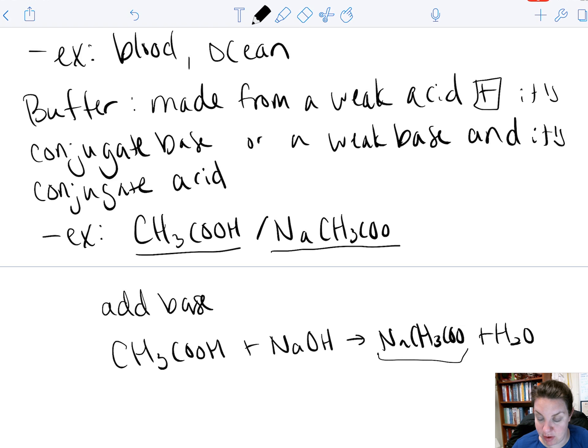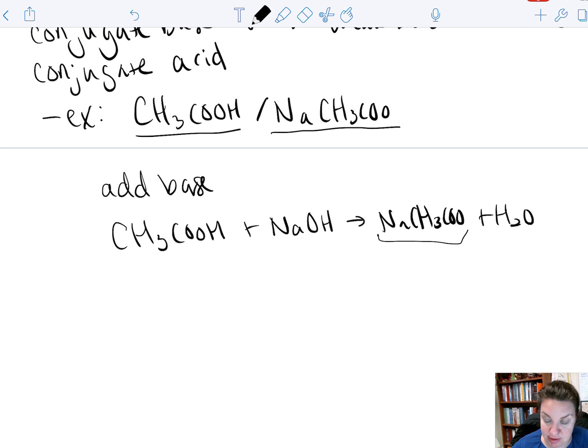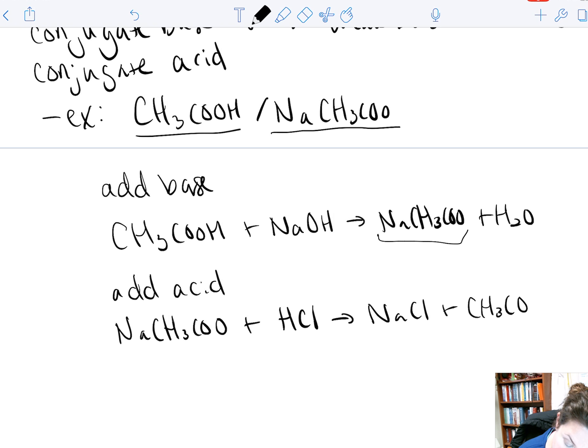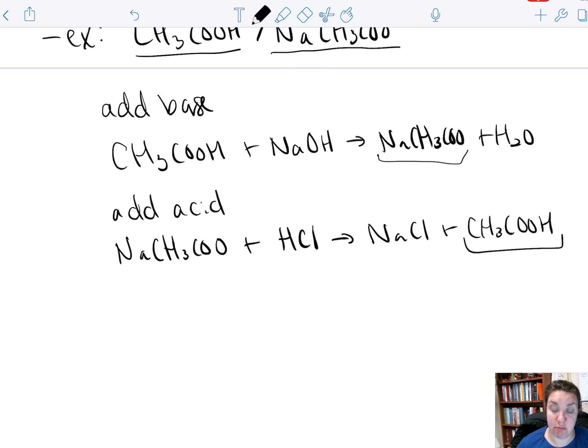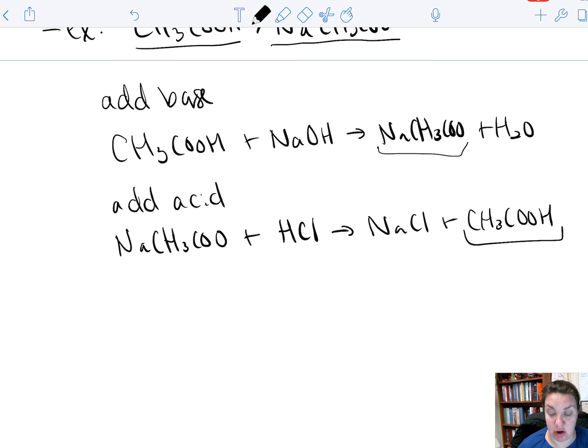So very little change because all we've done is produce our weak acid or weak base. And then if we add acid, the base component will react with it. And we'll produce, again, our components of our buffer solution. So it resists changes in pH by converting strong acid or strong base into its own conjugate acid or conjugate base.